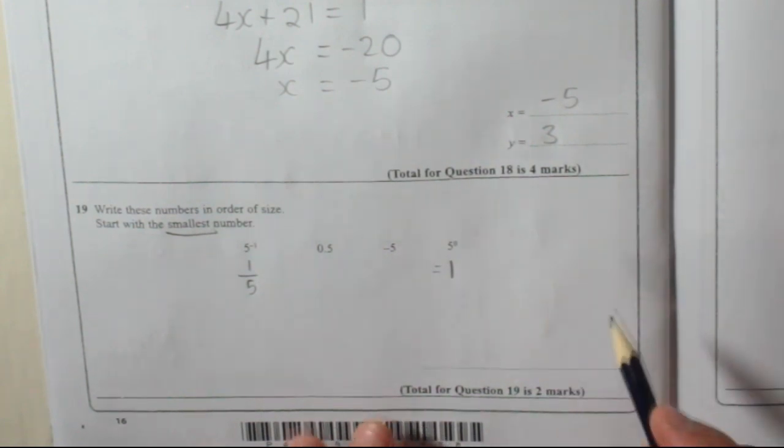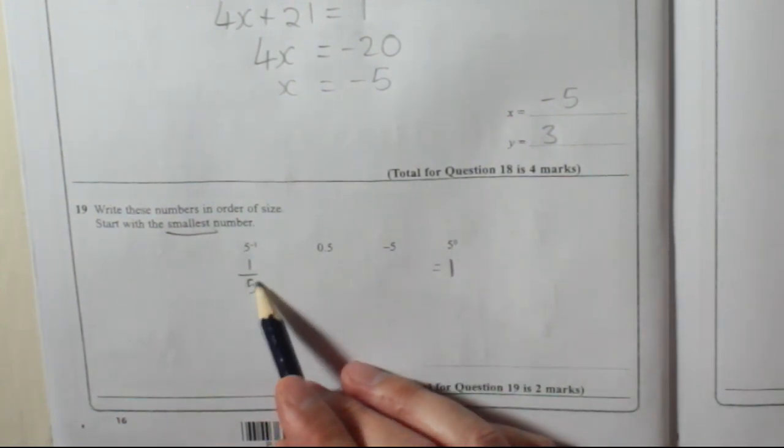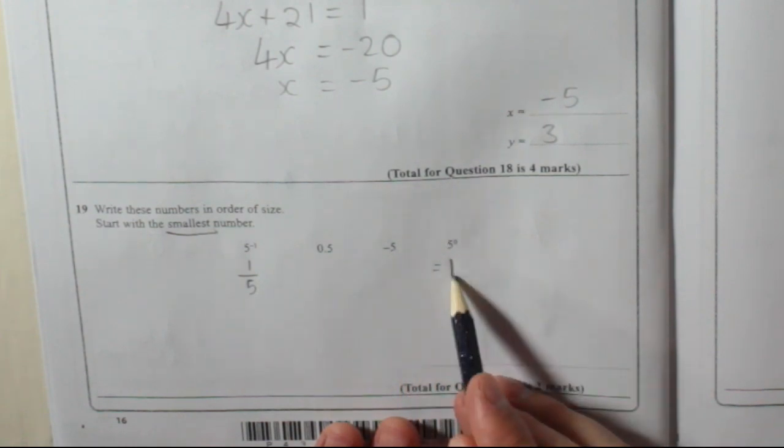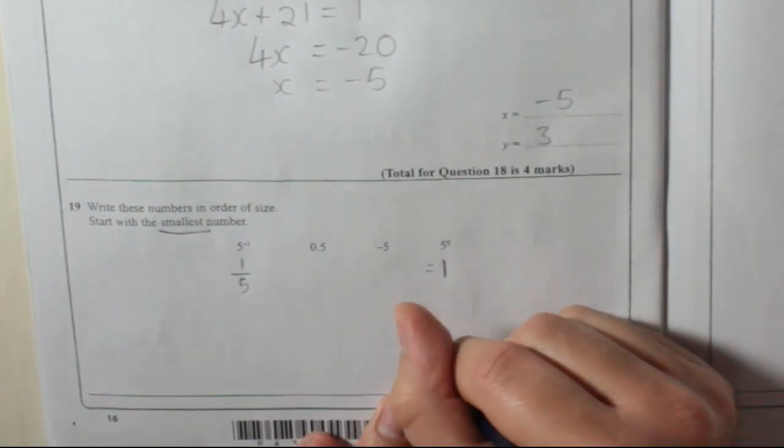So anyway, we can work out what's the smallest. Well, that's positive, that's positive, that's negative, that's 1 positive. So the smallest one is minus 5.